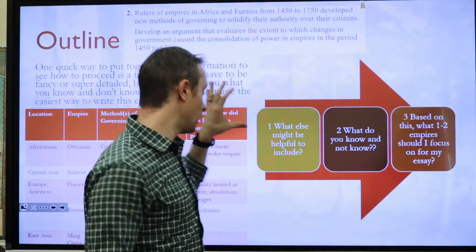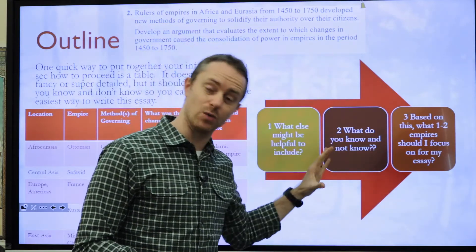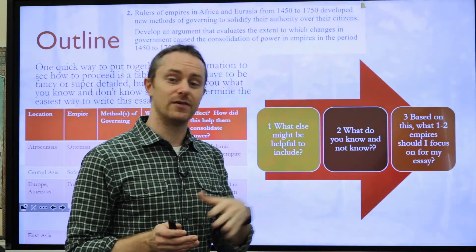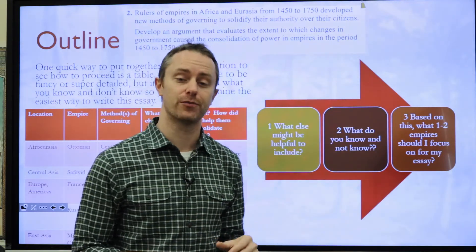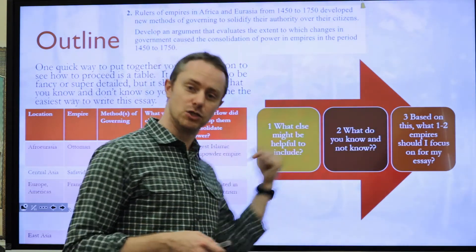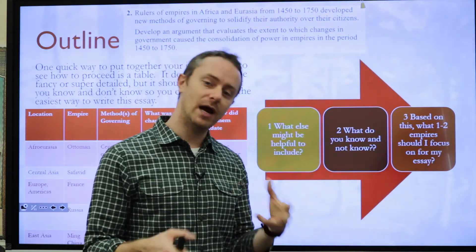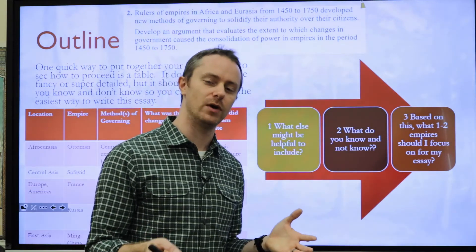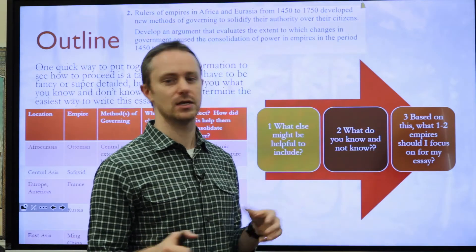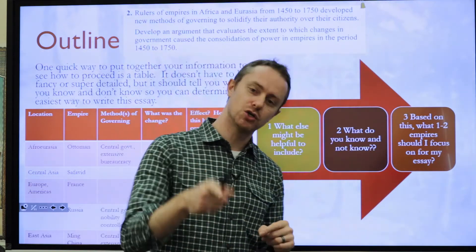You really need to think about what you know and what you don't know, because if you don't know enough about the Ottomans to write about them, you're not going to write about them. And if you don't know about any of these empires, you're probably going to choose a different prompt. The LEQ gives you three prompt options — you want to pick the one you know the most about. Doing something like this is going to help prepare you for your actual essay, rather than writing from scratch, getting halfway done, running out of time, and realizing you didn't say anything of substance. That's what a lot of students do — I don't want that to happen to you.